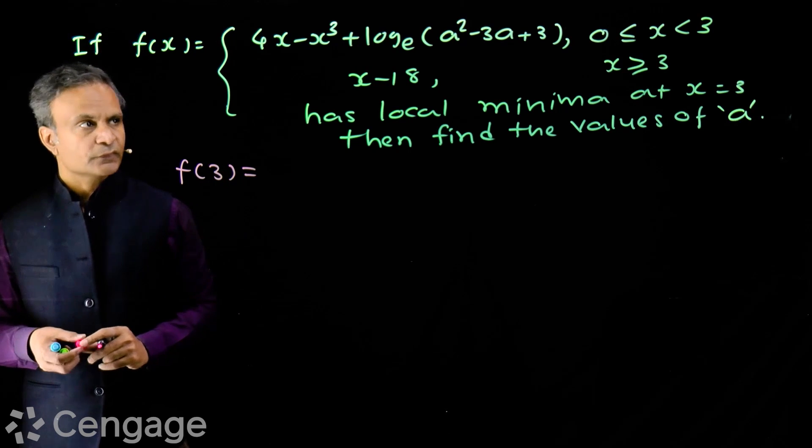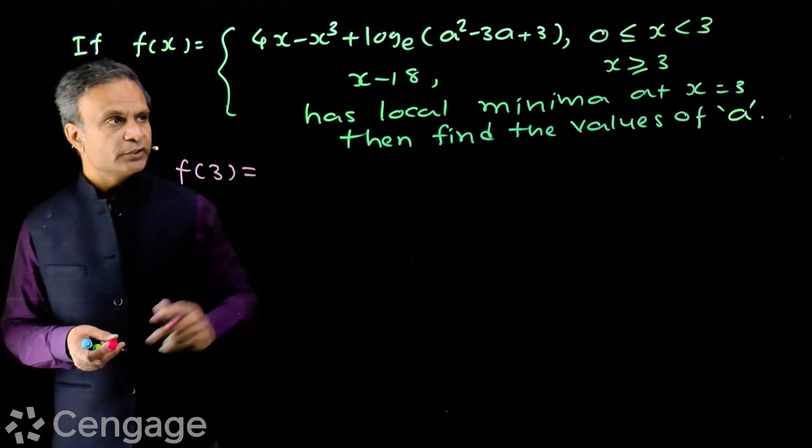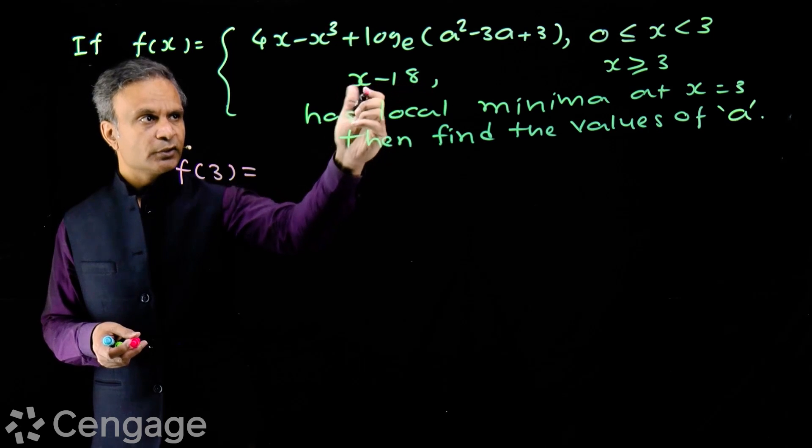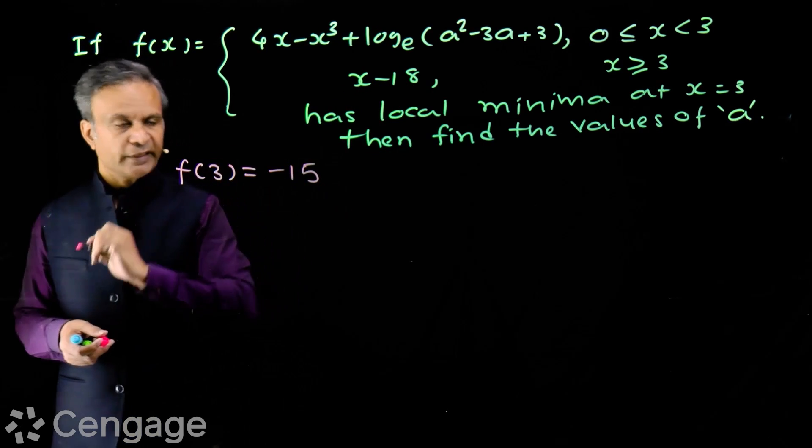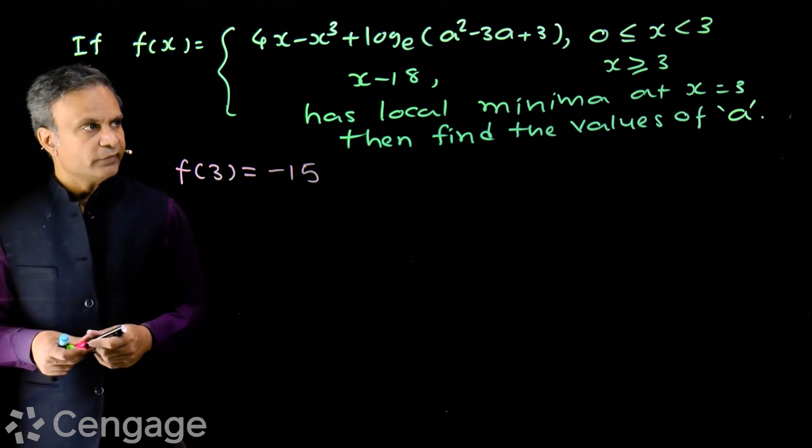For x equals 3, we use this branch function. Putting 3 here, we get f of 3 equals minus 15. This is f of 3.